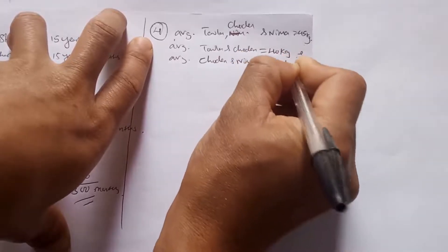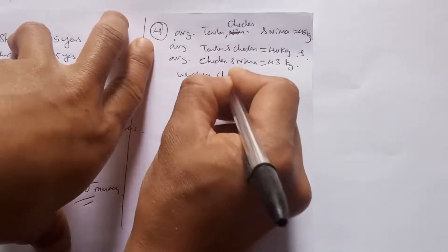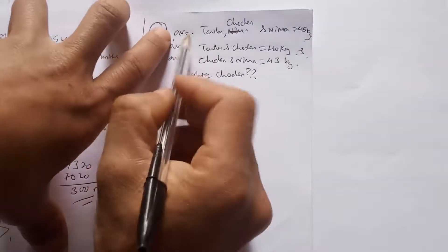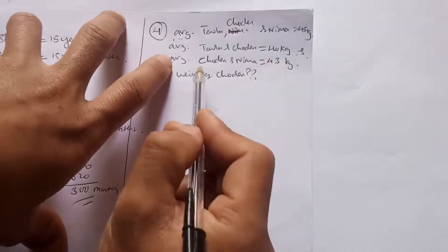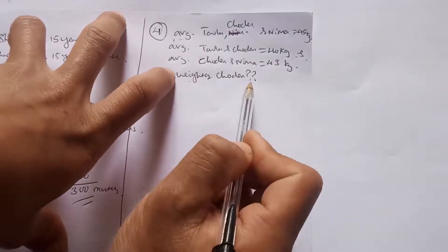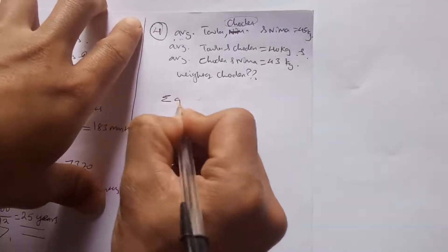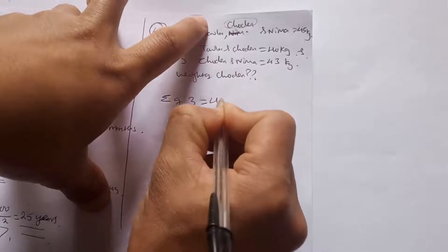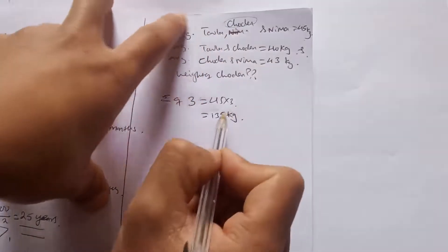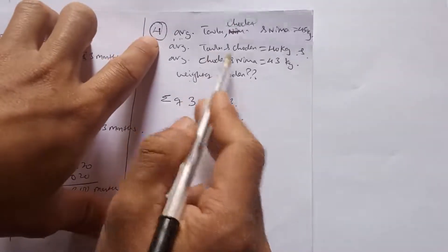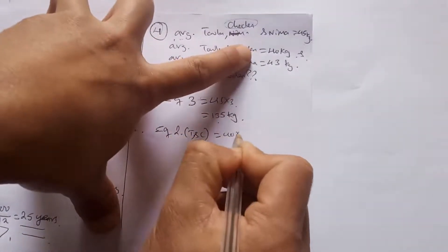Question type 4: The average weight of a group of 3 children is 45 kg. Similarly, the average weight of another group of 2 children is 40 kg. The overall average of all children together is 43 kg. What is the weight of one particular child? Sum of 3 is 45 multiplied by 3 equals 135 kg. Sum of 2 is 40 multiplied by 2 equals 80 kg.